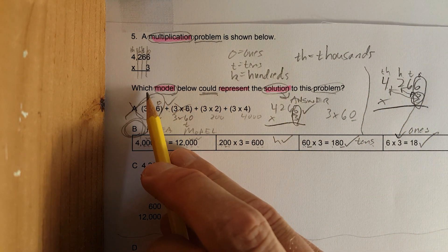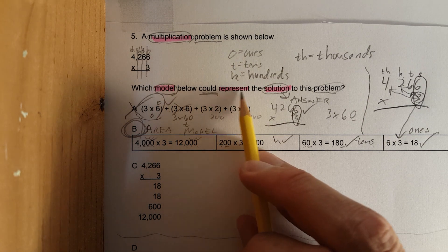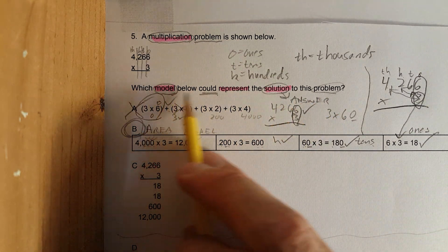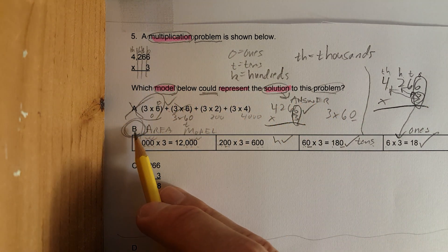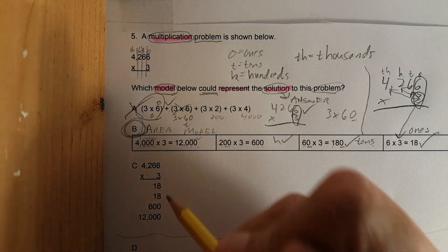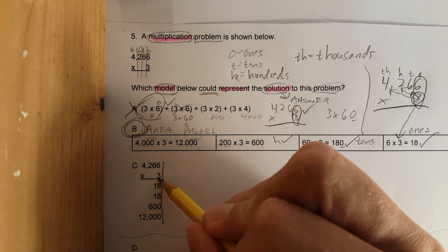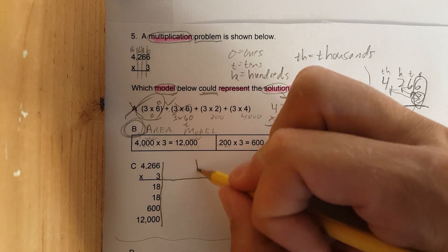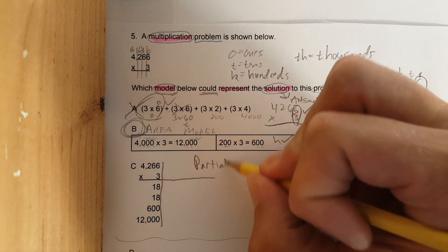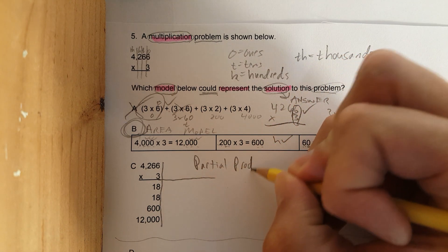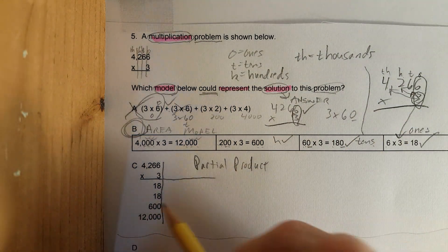Now go back to the question: which model below could represent the solution to this problem? That basically means there should only be one answer, but let's just double check and make sure. The next one - this problem was done not too long ago - this is partial product. Let's check it out.